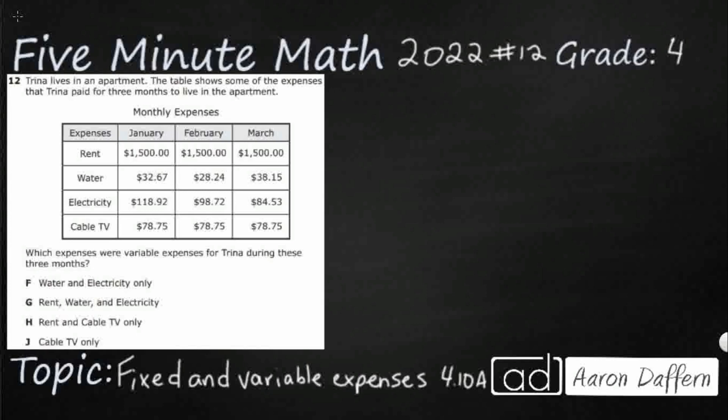So Trina lives in an apartment and these are some expenses that Trina paid for three months. We've got January, February, March, and our expenses are marching down the left-hand side here. She's paying rent, water bill, electric bill, and cable television. So which expenses were variable during these three months?